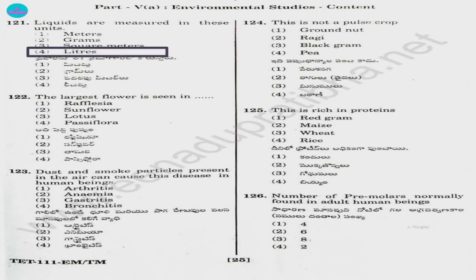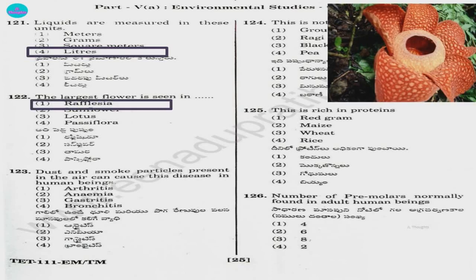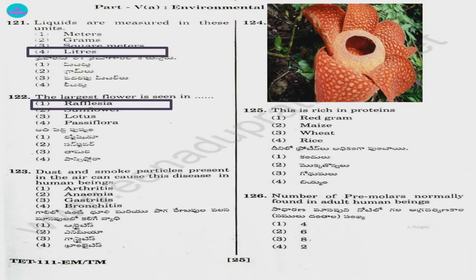Question 122. The largest flower is seen in: 1) Rafflesia, 2) sunflower, 3) lotus, 4) passiflora. And the answer is option 1, Rafflesia. This is the flower Rafflesia.